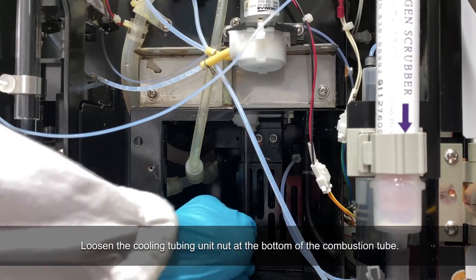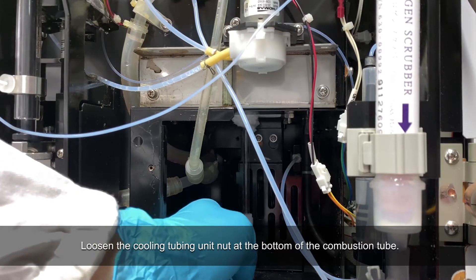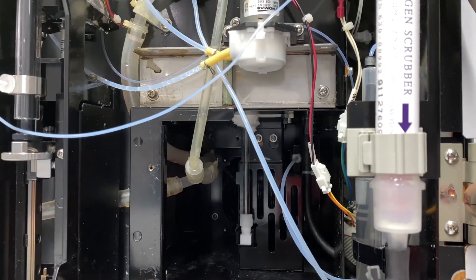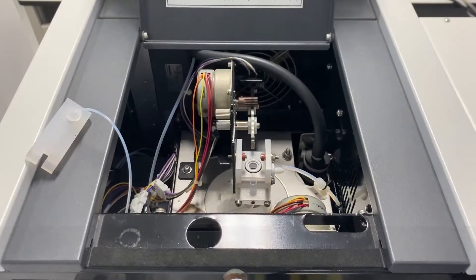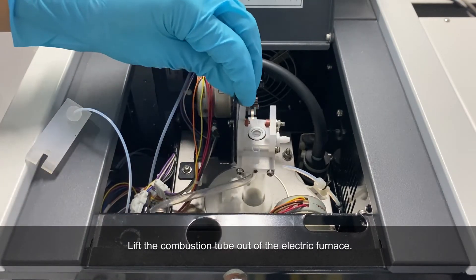At the bottom part of the combustion tube, loosen the cooling coil retaining nut. Now, carefully lift the combustion tube out of the electric furnace.